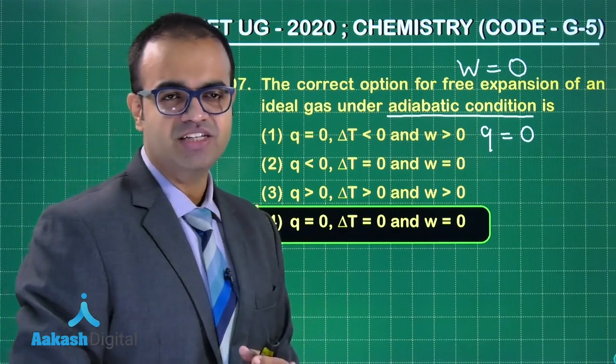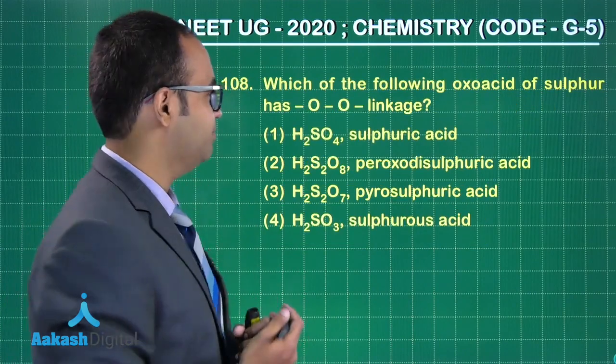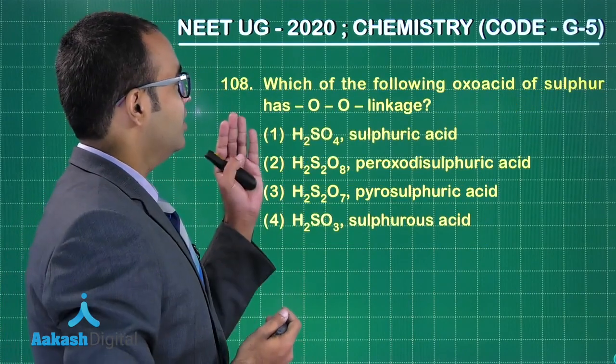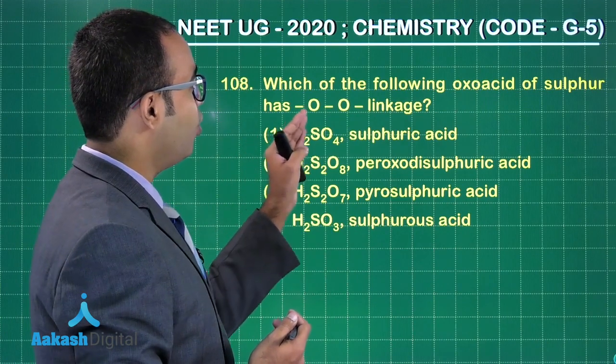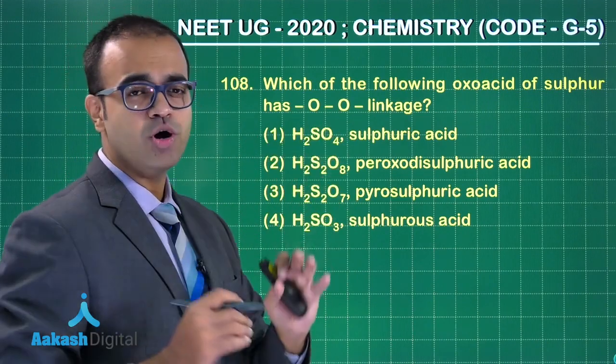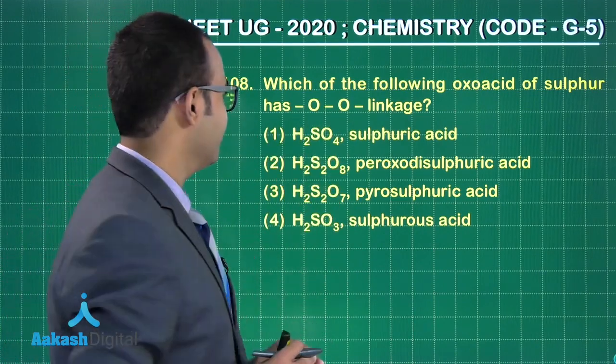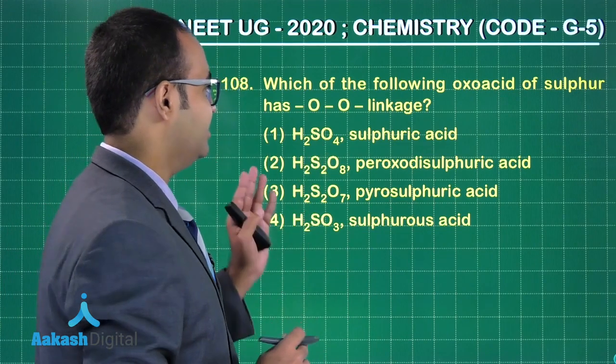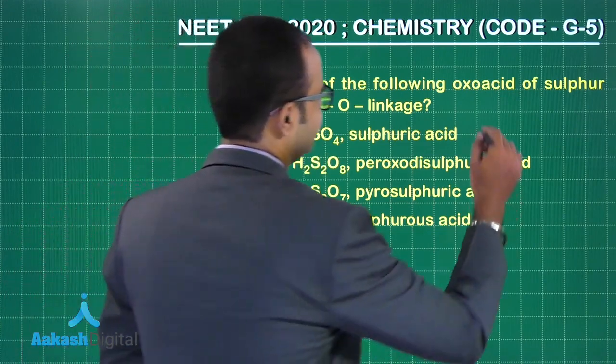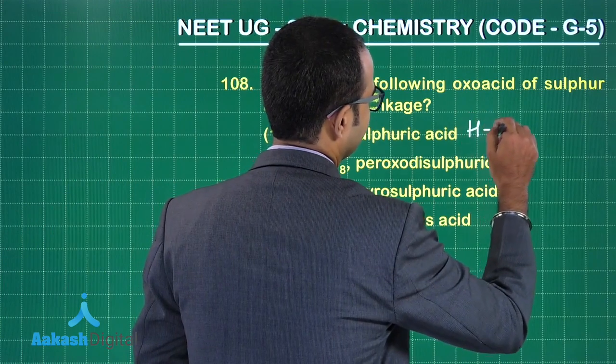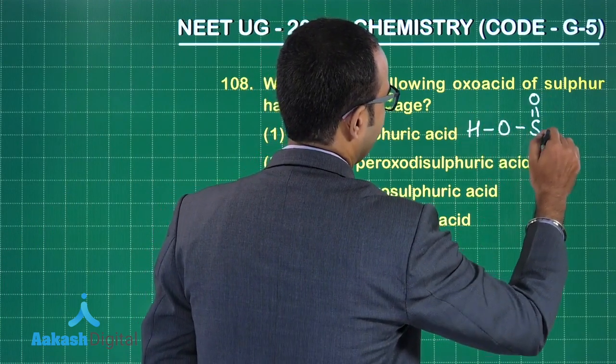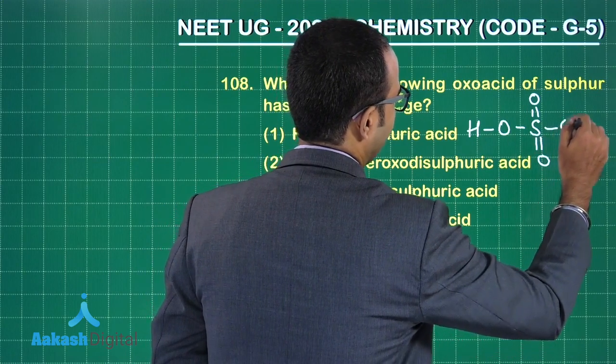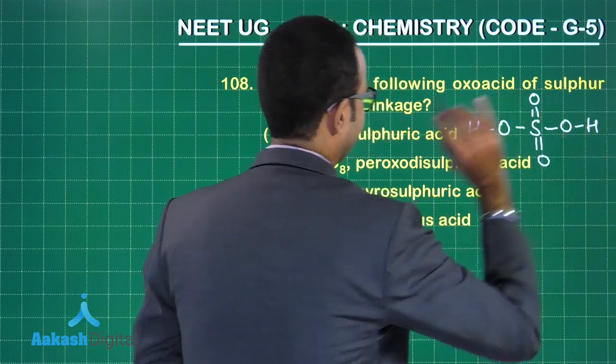Which of the following oxo acids of sulfur has O-O linkage? That is, we are talking about peroxide linkage. H2SO4, that is sulfuric acid. What is the structure of sulfuric acid? Sulfuric acid is H-O-S with double bond O, double bond O, and O-H.